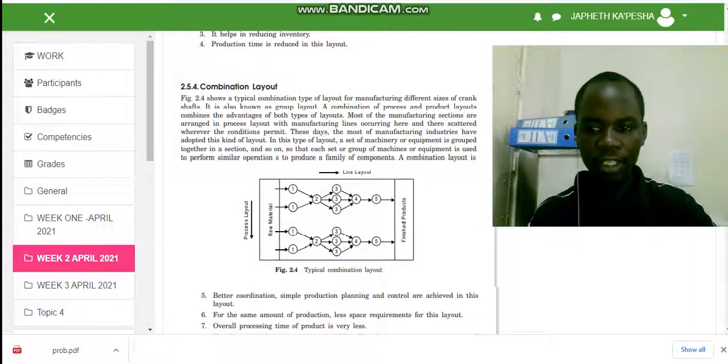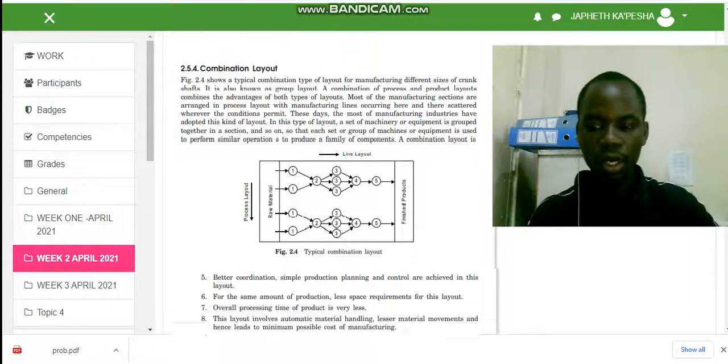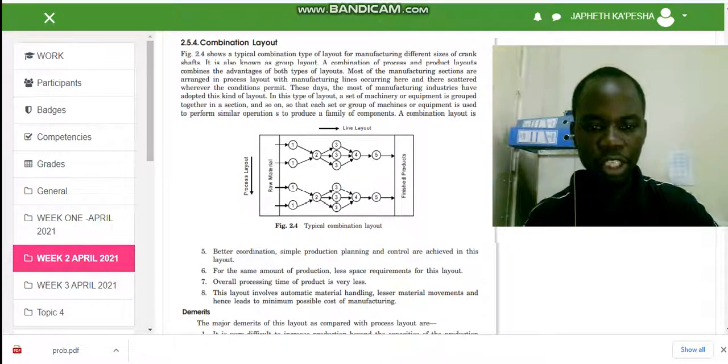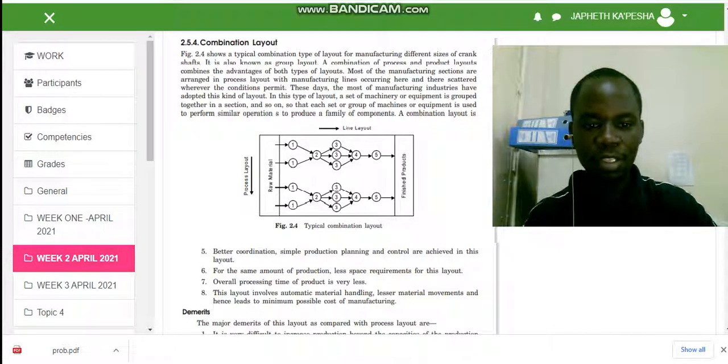What are the advantages of this type of layout? There is better coordination. Simple production planning and control are achieved in this layout. For the same amount of production, less space requirement is necessitated. Overall processing time of product is very less. This layout involves automatic material handling, lesser material movement, and hence leads to minimum possible cost of manufacturing.